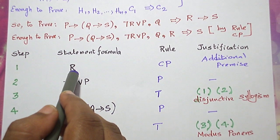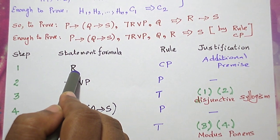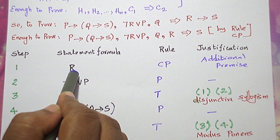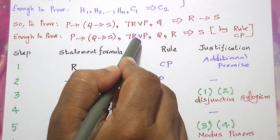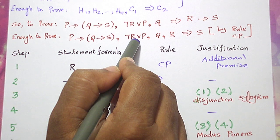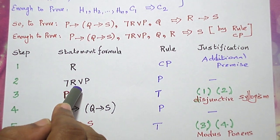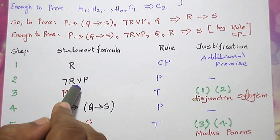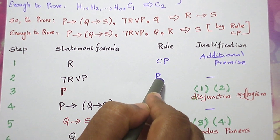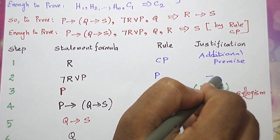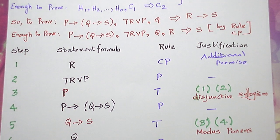Now let me take the next premise that contains R. Negation R or P is the next premise, so let me take it. This is introduced by rule P, so no justification is needed.